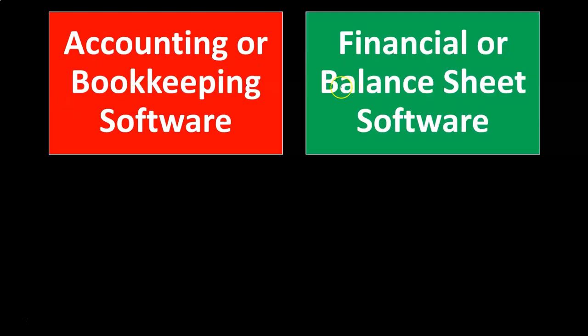The other option is what I call financial or balance sheet software. This software can also connect to financial institutions but in a different way — it's usually more investment-oriented and future-focused. Rather than using the double-entry accounting system, it pulls in ending balances directly. It can be a bit faster to use, but it doesn't give you the same assurances. When evaluating software, categorize it into these two main types and decide which is best for your particular needs.